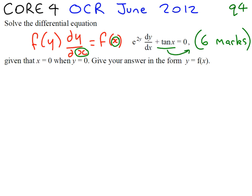Now you can see that you're given initial conditions: when x is 0, y is also 0. That is going to help us to find our arbitrary constant, our plus c. And once we've done all this work we need to give our answer in the form y equals f(x).